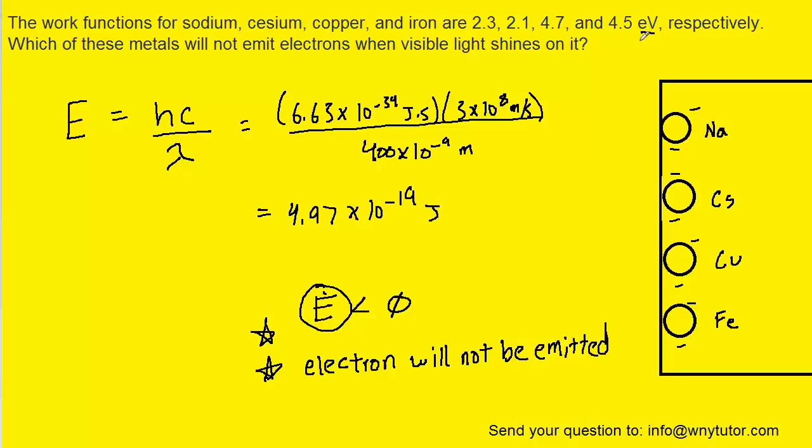The work functions are given in electron volts, so we want to convert this energy into electron volts to make it easy to compare. One electron volt is 1.6 times 10 to the minus 19th joules. The joules will cancel. When we punch that into our calculators, we get about 3.11 electron volts.